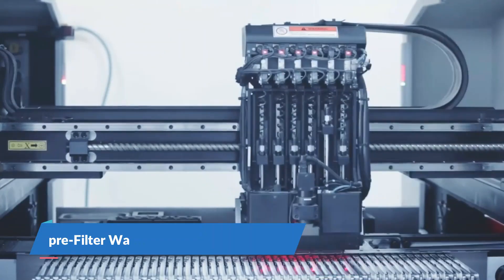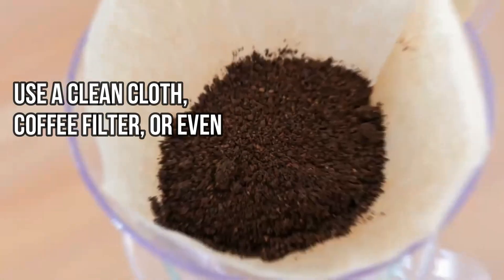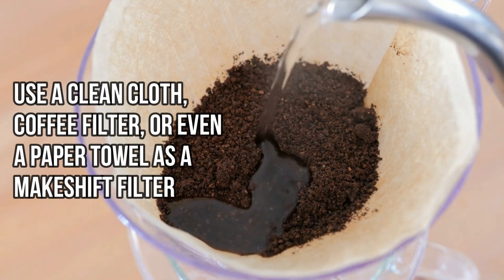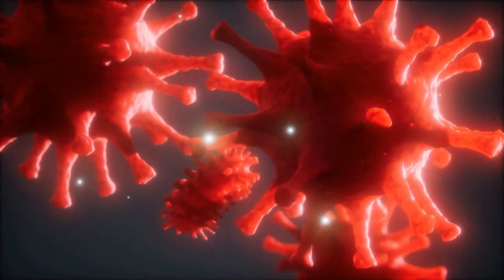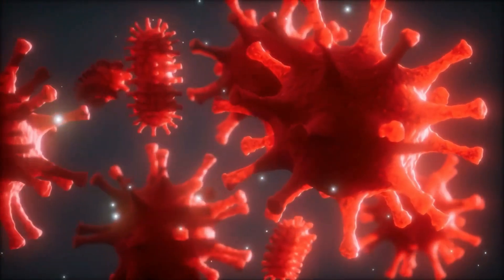Number 1: Pre-filter water to remove sediments. Before boiling, it's wise to pre-filter any visibly turbid or dirty water to remove large particles and sediments. Use a clean cloth, coffee filter, or even a paper towel as a makeshift filter. This step helps in achieving clearer water and reduces the risk of consuming visible contaminants.